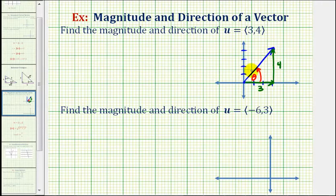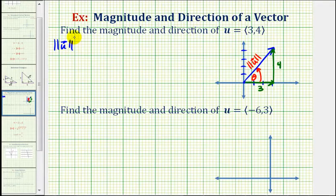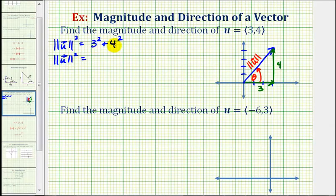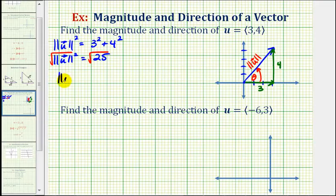The magnitude of vector u would be the length of this vector. And because we have a right triangle, we can use the Pythagorean theorem to determine the magnitude of u. We have the magnitude of u squared is equal to three squared plus four squared. Three squared is nine, four squared is 16, and nine plus 16 is 25. Taking the square root of both sides — magnitude is always positive — so the magnitude of u equals the square root of 25, or five.